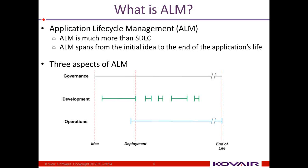As illustrated in the picture, ALM can be divided into three distinct areas: governance, development, and operations, each shown in its own horizontal line. An application's life cycle begins with an idea. Once it is created, the next big event is deployment. Then the application goes into production, and finally, when it is no longer of business value, the application reaches end of life and is removed from service.